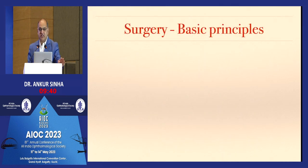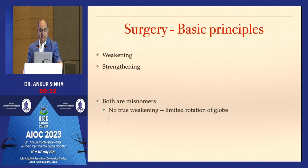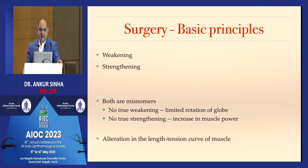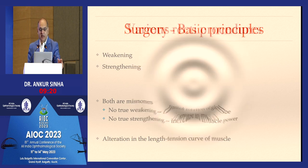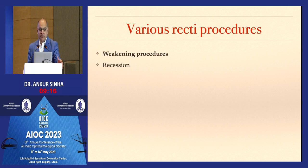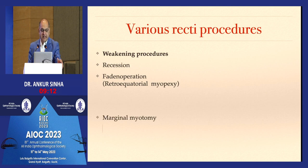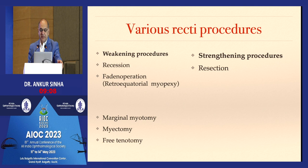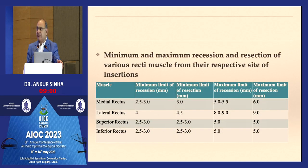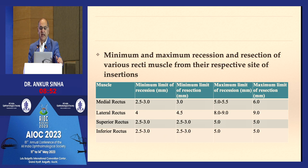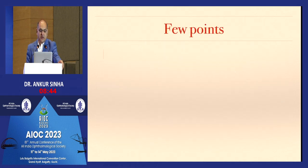In surgery planning, two basic principles apply: weakening and strengthening. There is no true weakening or strengthening — it is an alteration of the length-tension curve, as true weakening would cause movement limitation and true strengthening would increase muscle power. Common procedures for the recti include recessions and farden (resection) as well as lesser-known marginal myotomy, myectomy, and free tenectomies. Strengthening procedures are resection and tuck or plication, with lesser-known advancement and cinching.